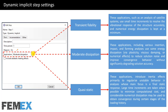Then we have the Application setting, which is very important in the Dynamic Implicit Step. It has three main states: Transient Fidelity, Moderate Dissipation, and Quasi-static.